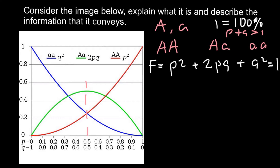Now let's look at the position where the two alleles p and q each equal 50%. The frequency of the homozygous dominant genotype (shown in red) equals about 25%, the frequency of homozygous recessive also equals about 25%, and the heterozygous genotype equals 50%. So 25 + 50 + 25 = 100%. However, the scale of this graph is rough, so it is hard to read exact numbers.